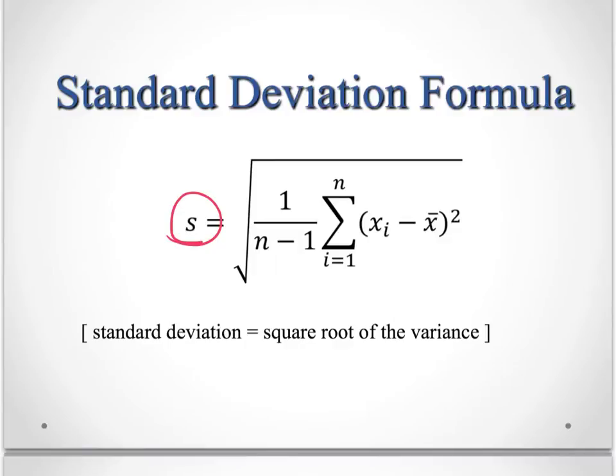And when we take the square root of that, we have the standard deviation. Standard deviation is the square root of the variance. So this, all this under the radical sign is the variance formula. And S is the symbol that we use for standard deviation of any sample that we have.